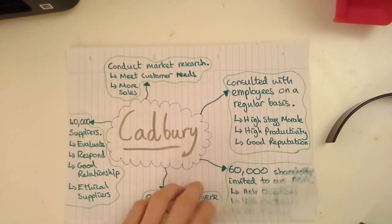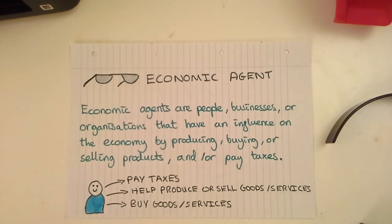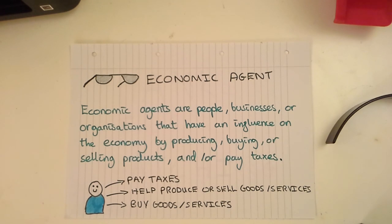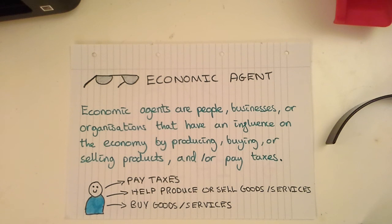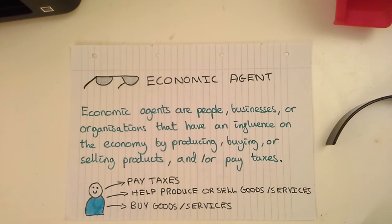I'm going to finish off with one final key term, which is an economic agent. This is a person, business or organisation that somehow influences the economy by producing, buying or selling products or services, and or paying taxes. For example, an average person who helps to produce or sell goods or services — they may even provide them directly if they're working in the tertiary sector — is most likely paying income tax. So they're kind of doing all three: producing, buying and possibly selling products, and paying tax. It's almost as if they're stakeholders in the economy as a whole — they're impacting on it and being impacted by it.